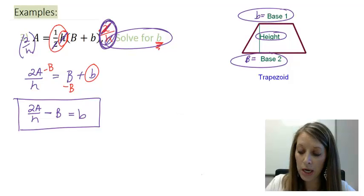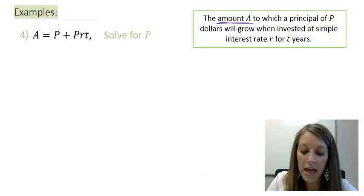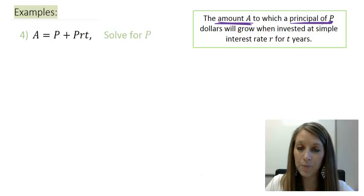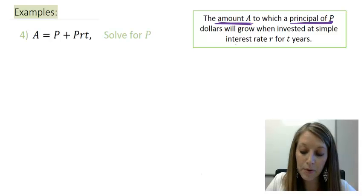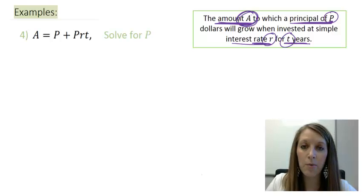I have one more example of this type of equation. A equals P plus PRT. And this stands for money. We all like money problems. The amount A is the total amount at the end of your account. If you start with a principle of P such and such dollar, when you invest it at a simple interest of rate R, like a 4% interest rate, for T a certain amount of time. So, hypothetically, I am investing $100 for 4% interest for 5 years. That can tell me how much money I am going to have at the end of it, if it is computed by using simple interest.